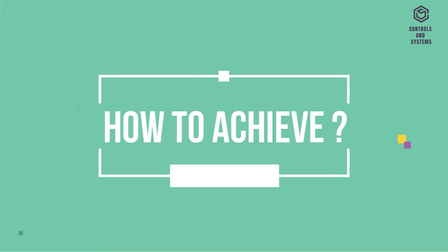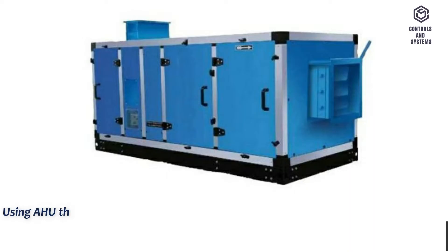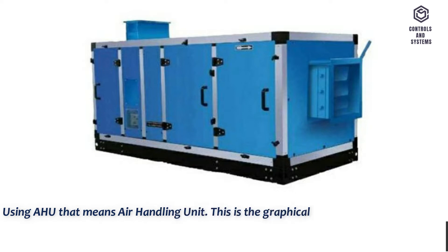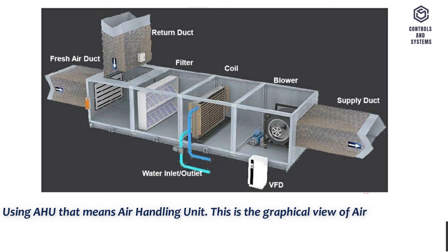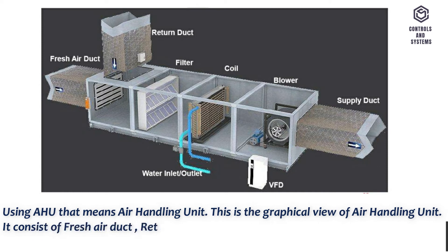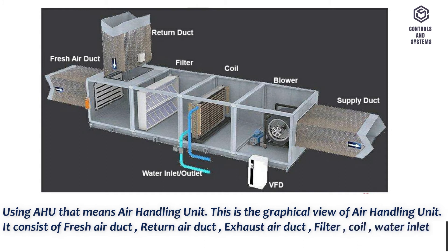This is the graphical view of the air handling unit, AHU. It consists of a fresh air duct, return air duct, exhaust air duct, filter, coil, water inlet and outlet pipes, blower and so on.